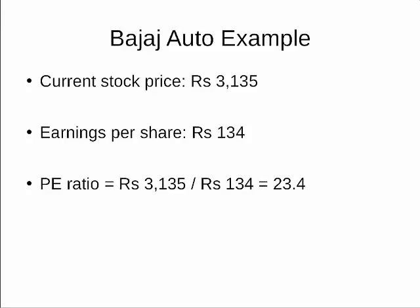Let's take a look at an example of Bajaj Auto's PE Ratio. Suppose Bajaj Auto's current stock price is Rs. 3,135 and their most recent earnings per share is Rs. 134. Using our formula gives us a PE Ratio of 3,135 divided by 134, equal to 23.4.